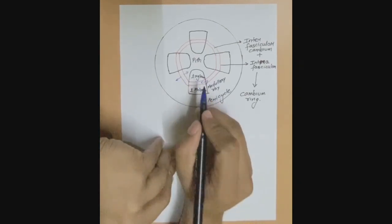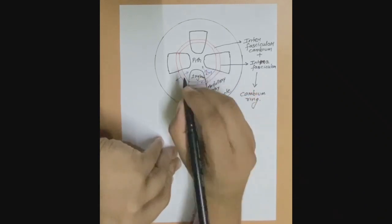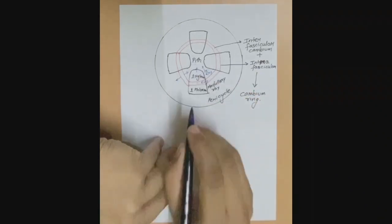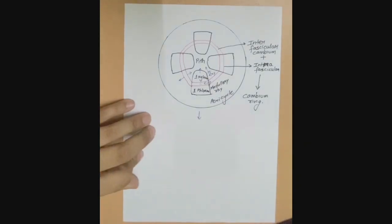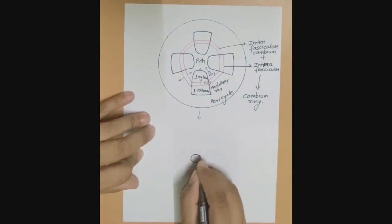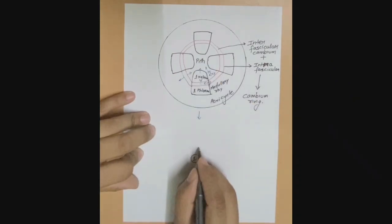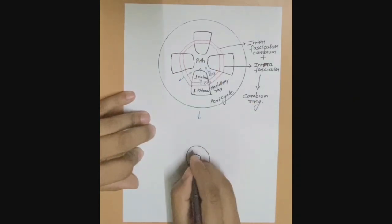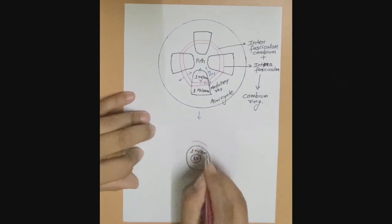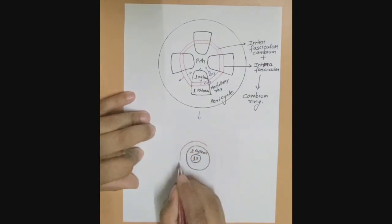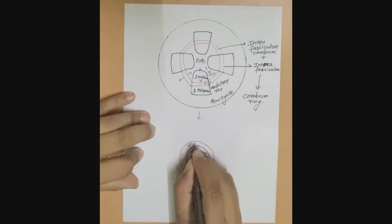This cambium ring divides internally as well as externally. Internally, this is your secondary xylem formation, which pushes the medullary ray and pushes the primary xylem. The medullary ray cells and pit cells are destroyed because they are living cells. So the position of the primary xylem is displaced, and outside we have secondary xylem followed by the vascular cambium.